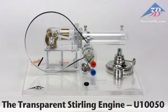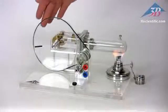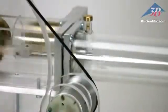The transparent Stirling engine, item number U10050 from 3B Scientific. The Stirling motor presents quantitative investigations of Stirling's cycle and can be operated in three different modes.